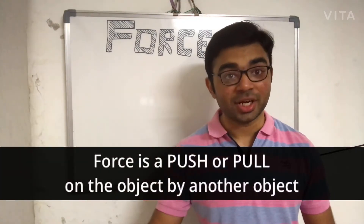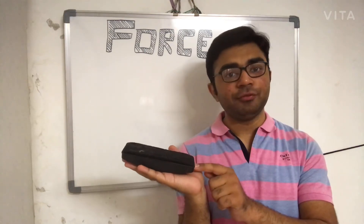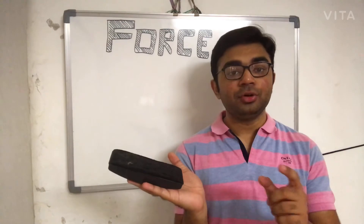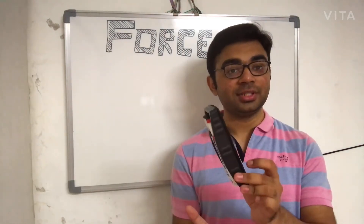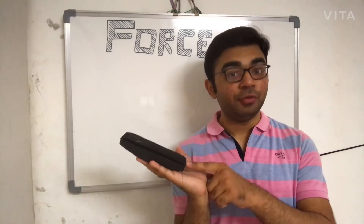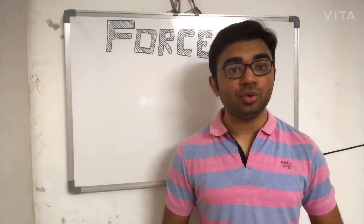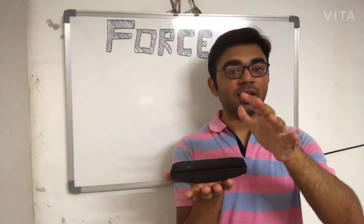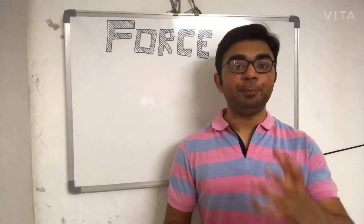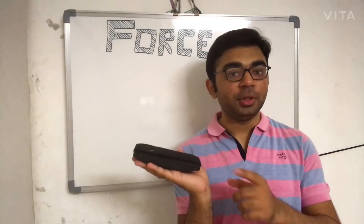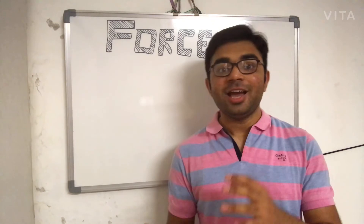Let's take an example — this is the duster. If I am applying a pushing force on this duster, then a force is being exerted by one object on another object, and the alteration in the normal state of this duster can be seen after applying the force. For the pulling force example, if I let go of the duster, gravity pulls it towards the surface of the ground — that is the pulling force exerted by gravity. Whereas in this example, a pushing force is exerted on the duster by my finger.